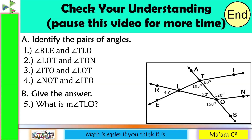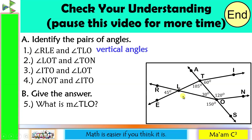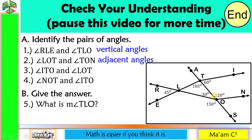Identify the pairs of angles. Number 1, angle RLE and angle TLO — they are vertical angles. Number 2, angle LOT and angle TON — they share a common ray, so these are adjacent angles. Number 3, angle ITO and angle LOT — 60 and 30. Since 60 plus 30 equals 90, they are complementary angles.